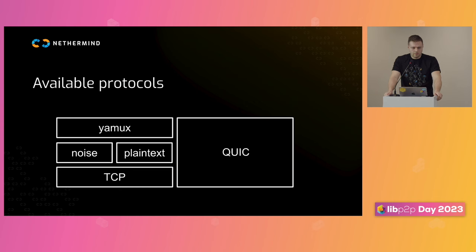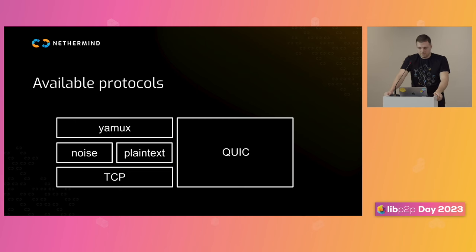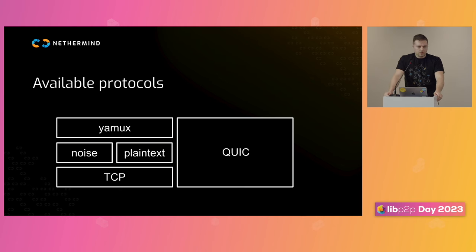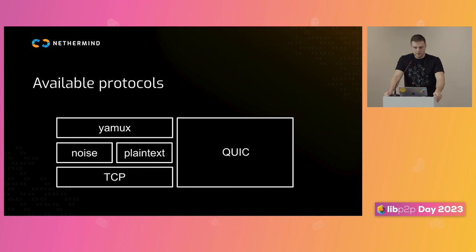We found that MS QUIC has some small bugs, but it was already working when we tested it — for example, trying to communicate with other implementations like Go ones — but there are still some issues with Rust and zig-zag. We hope to fix them soon.